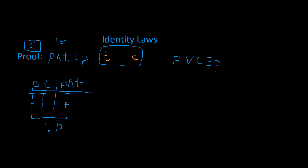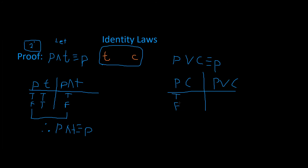I'm going to write it out because the statements are split apart. We have P AND T is logically equivalent to P. We need to write out our statement variables right here, then write out our compound statement. This is going to be true and false. The contradiction C always has a truth value of false — no matter if we have 100 statement variables, it's always going to be false.